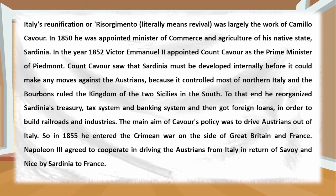To that end, Cavour reorganized Sardinia's treasury, tax system, and banking system, and then obtained foreign loans in order to build railroads and industries. The main aim of Cavour's policy was to drive the Austrians out of Italy. So in 1855 he entered the Crimean War on the side of Great Britain and France. Napoleon III agreed to cooperate in driving the Austrians from Italy in return for Savoy and Nice being ceded by Sardinia to France.